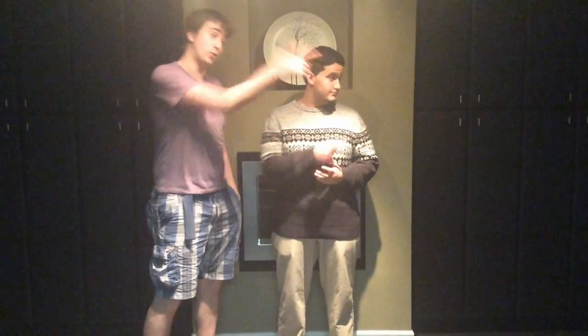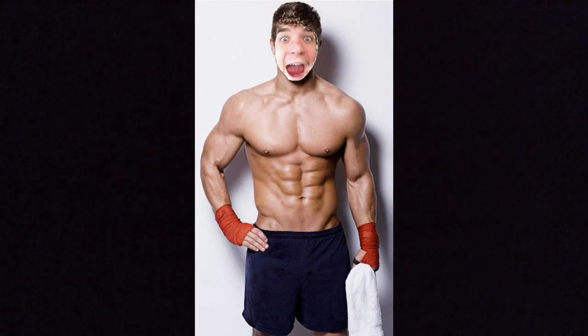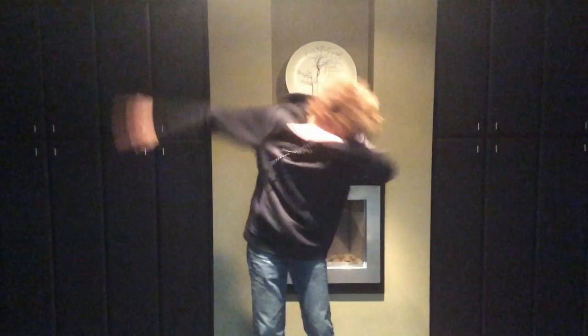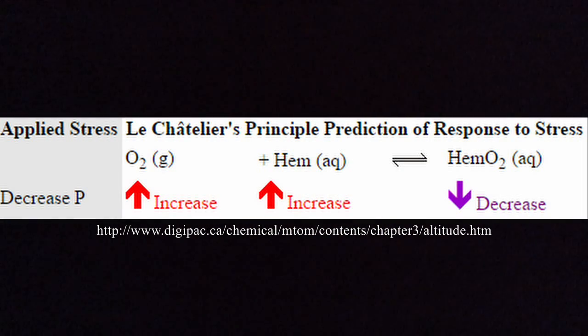Are there any factors that affect the equilibrium process in your body? Altitude is one of these factors. As altitude increases, the pressure of the atmosphere itself decreases, decreasing the side of the equation with more moles. The right side decreases to maintain equilibrium, resulting in less oxyhemoglobin.